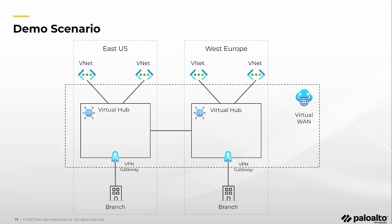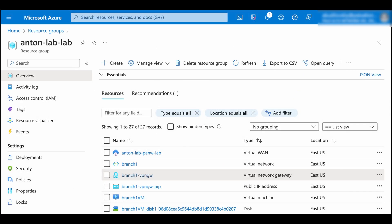Here we have a virtual WAN with two hubs deployed in East US and Western Europe. Let's secure it using Cloud NGFW for Azure.